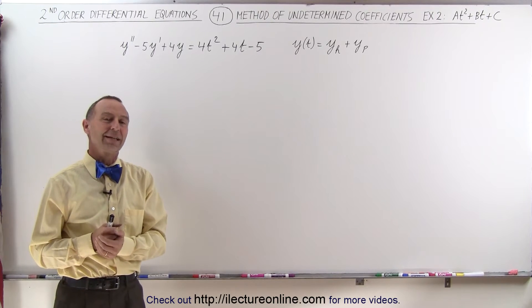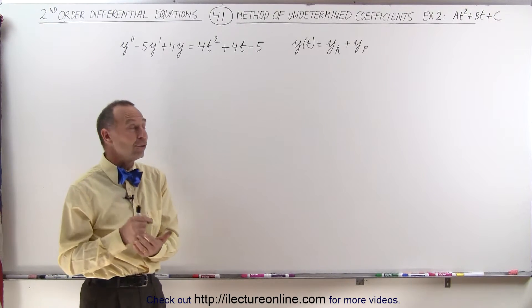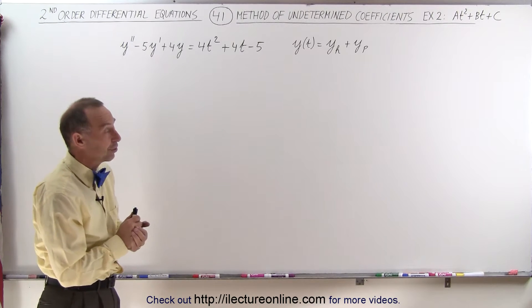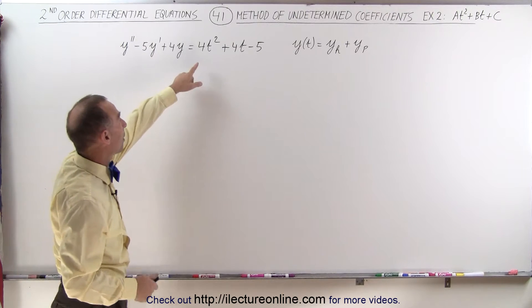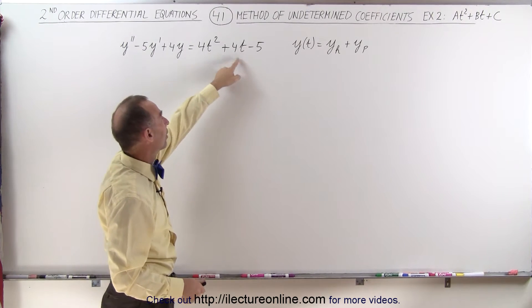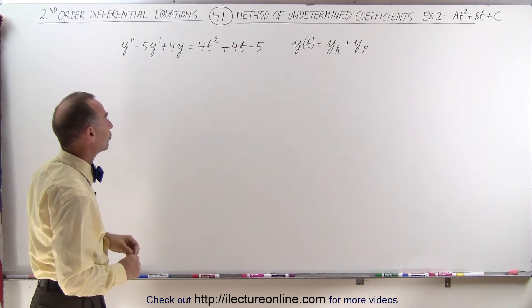Welcome to iLectureOnline. Our second example of how to use the method of undetermined coefficients involves a function that is a polynomial. This is what makes this a non-homogeneous differential equation.